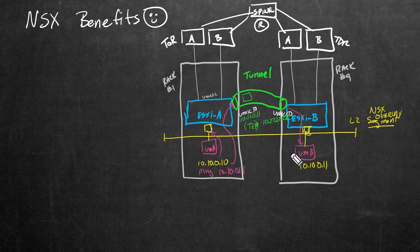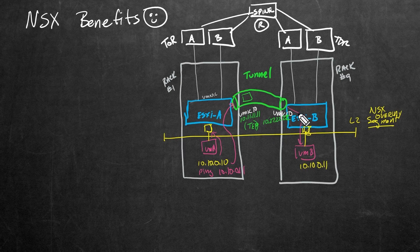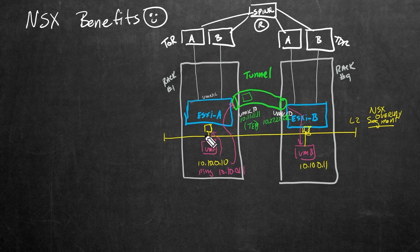From the client's perspective, it just looks and feels like a common layer-two broadcast domain that VM A and VM B are both in. But behind the scenes, these two ESXi hosts — which are enabled for NSX — have set up tunnel endpoints, and they are encapsulating and routing the traffic over that tunnel back and forth on behalf of VMs connected to that layer-two segment.